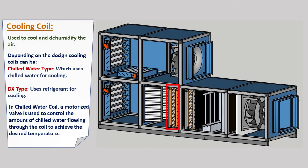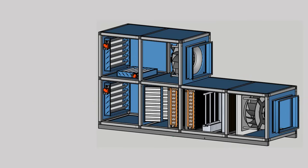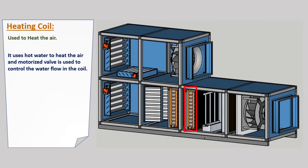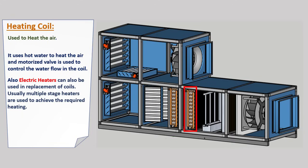Then we have a heating coil, used to heat the air. It uses hot water, and a motorized valve controls the water flow through the coil. Electric heaters can also be used as a replacement for heating coils. Usually multiple stages of electric heaters are used to achieve the required heating.